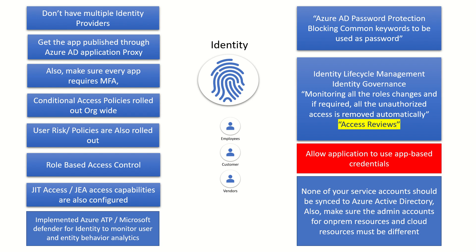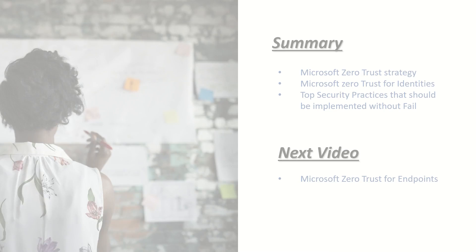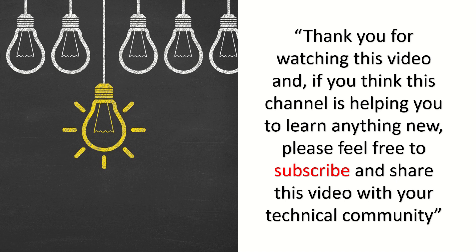There is official documentation for all these different use cases — I'll share that in the description, so please go ahead and read that article. To summarize what we've discussed: Microsoft Zero Trust security strategy means combining the principles of Zero Trust with your enterprise guidelines and the technology or features you can implement to improve security posture, along with the identity-specific security use cases. In the next video I'll talk about Microsoft Zero Trust for endpoints. If this channel is helping you learn something new, please subscribe and share this video with your technical community.